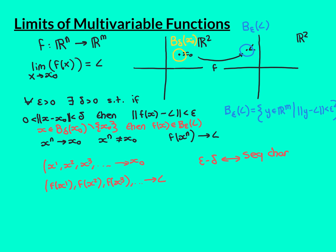The sequence characterisation states that every domain sequence converging to x0 that does not contain terms equal to x0 itself, when you look at its image sequence, it converges and always to the same value — every single domain sequence gives an image sequence converging to L. We want to show this meets the epsilon-delta definition. The way we'll do this is by contradiction: assume the epsilon-delta definition isn't satisfied, then contradict the sequence characterisation.